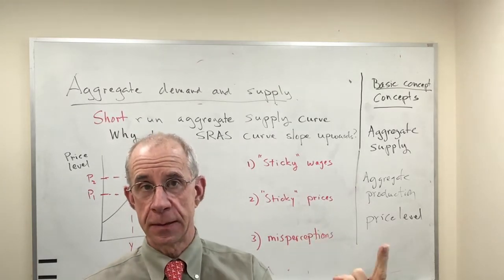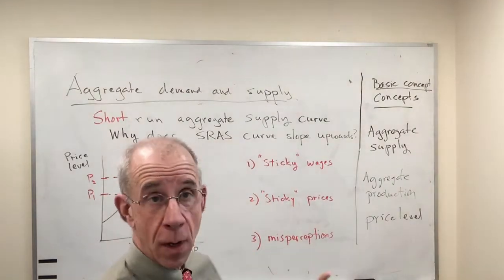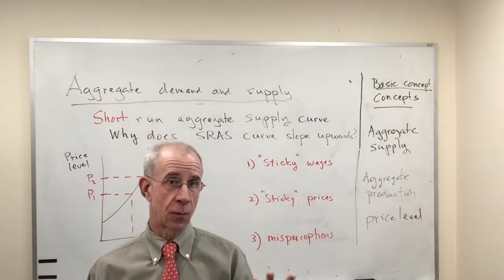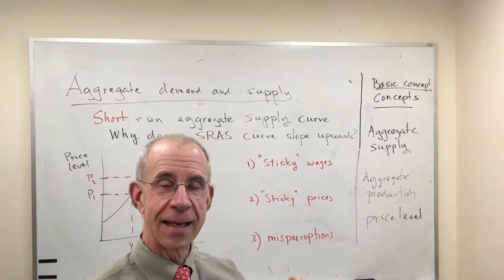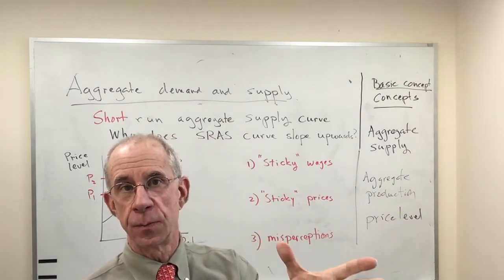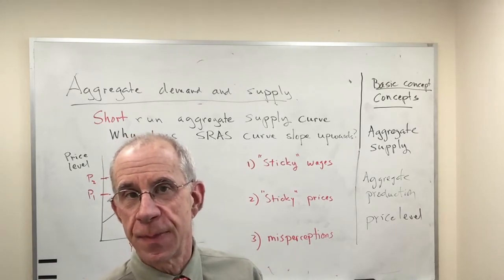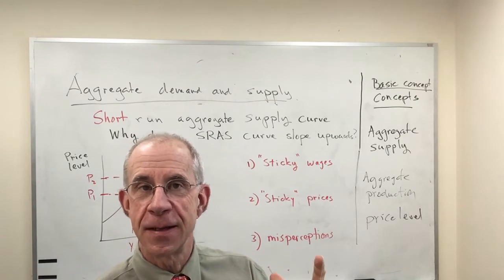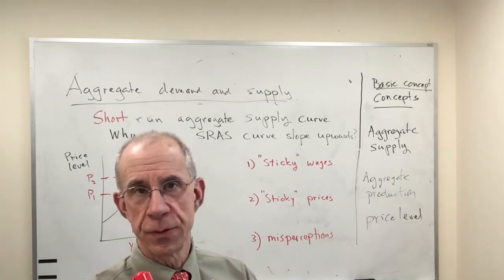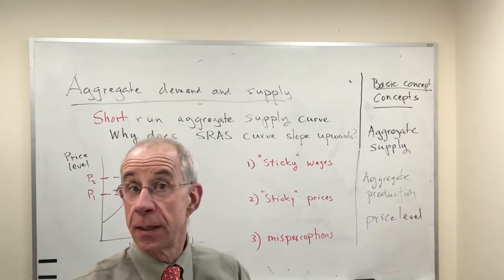In the previous video, we looked at the aggregate demand curve and the long-run aggregate supply curve. A feature of the long-run aggregate supply curve is that the amount of output that the economy will produce or can produce over the long haul really doesn't depend on the price level. It depends on the labor force, the capital stock infrastructure, and the technology.